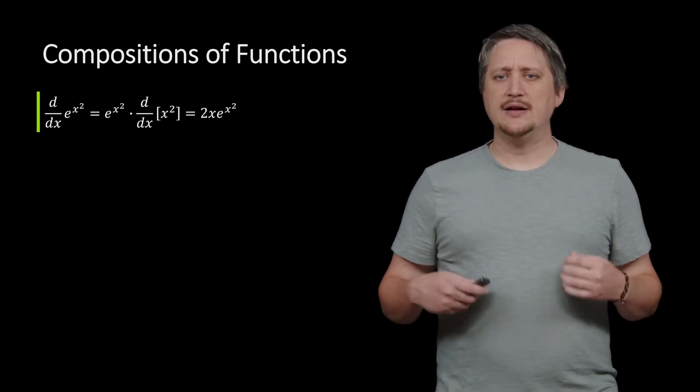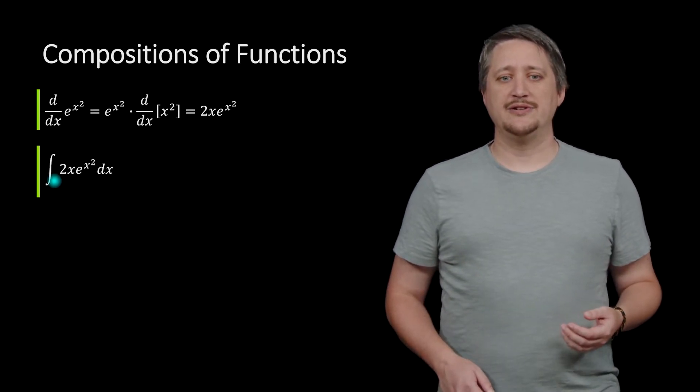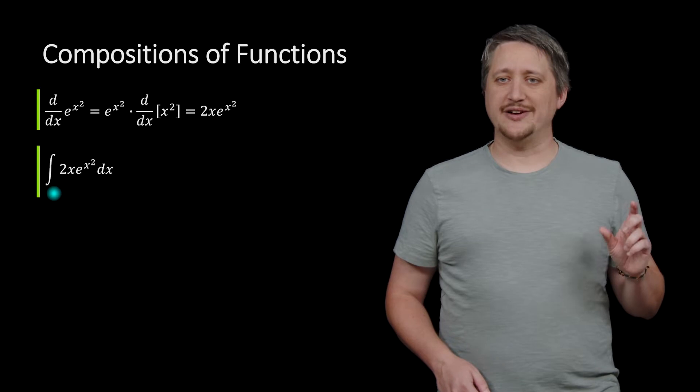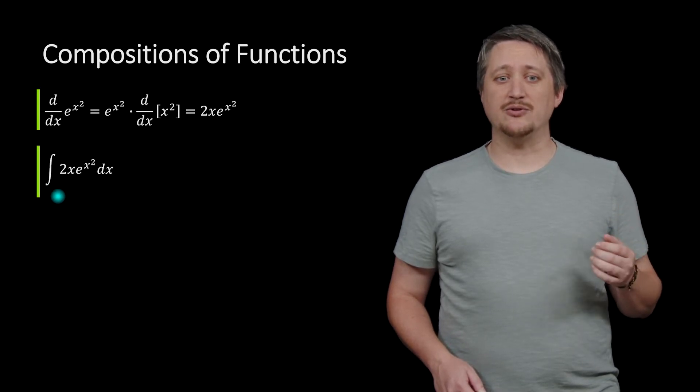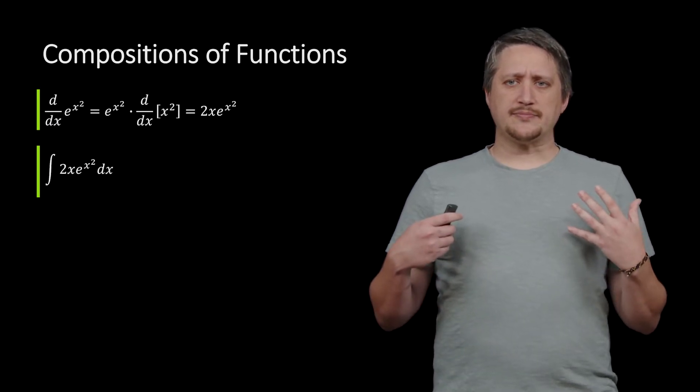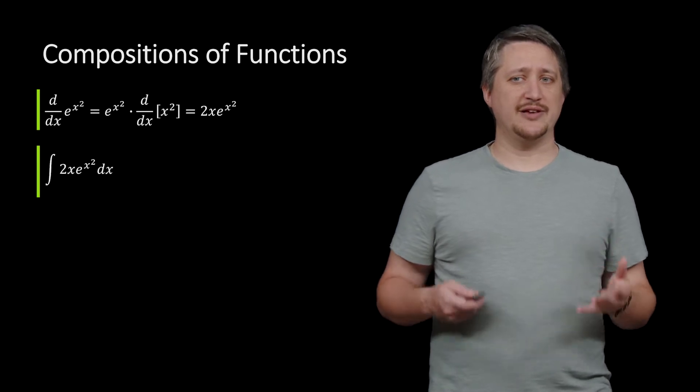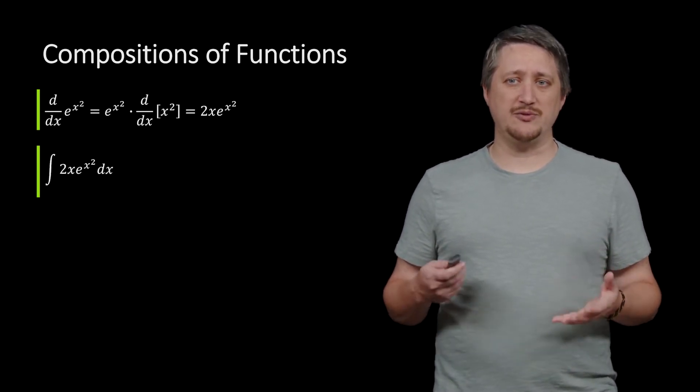So in particular, let's say that we are looking at this sort of integral, we're trying to do this antiderivative or indefinite integral of 2x e to the x squared. Now often recognizing the composition of functions, like the fact that it happened, is often one of the hardest parts.